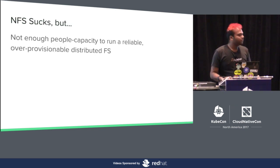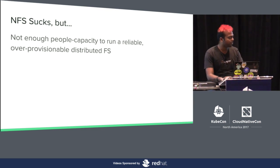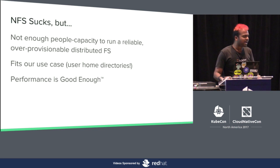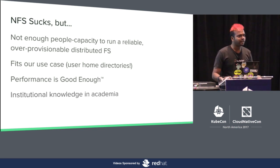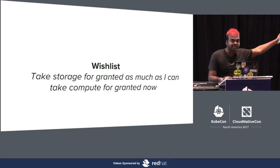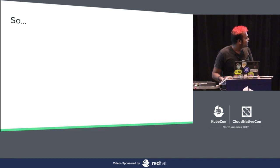NFS sucks, but we don't have enough people to run GlusterFS — I feel like it's not a part-time situation that someone can run. NFS totally fits our use case: it's home directories and we don't really care about the performance. We're not running a database on it — it's good enough. So someone please fix this for us. It can't be us, but I think lots of people are working on it, and that's great.